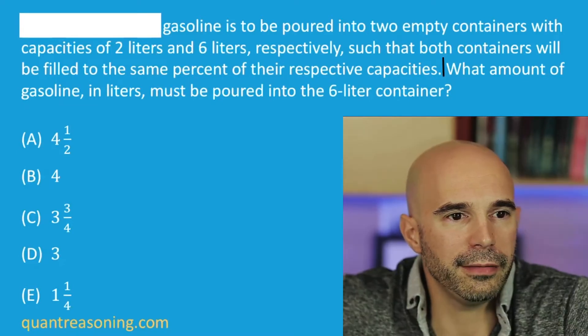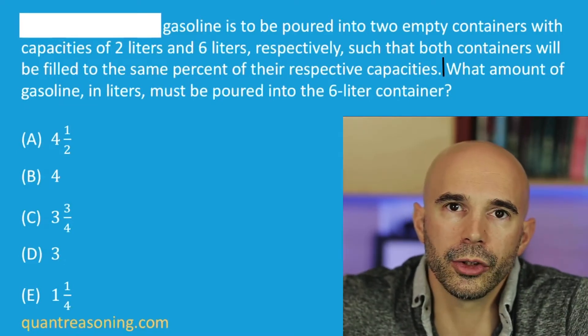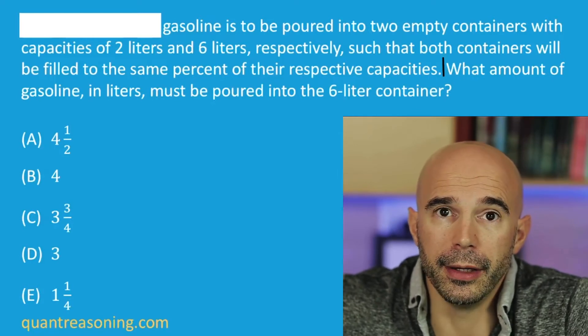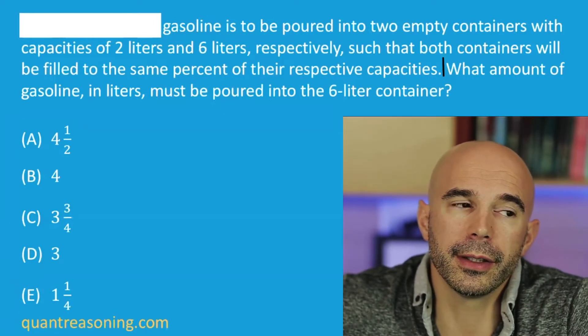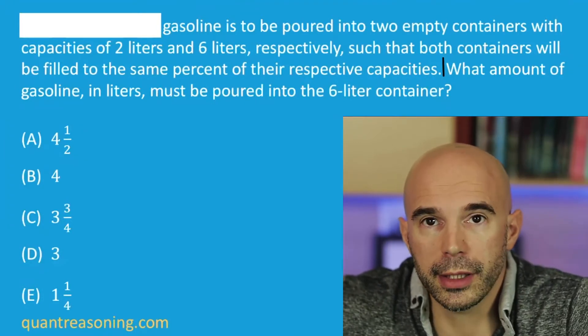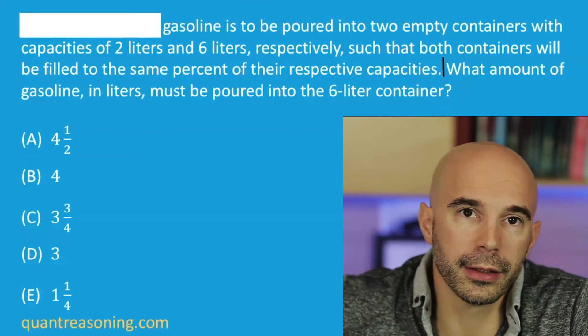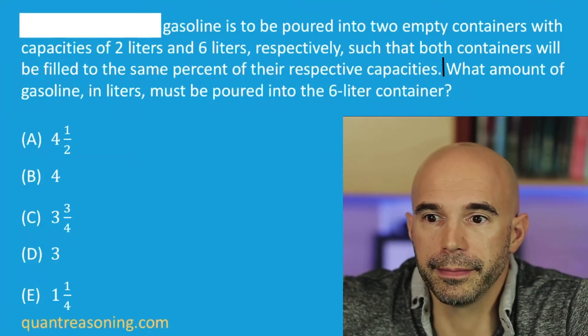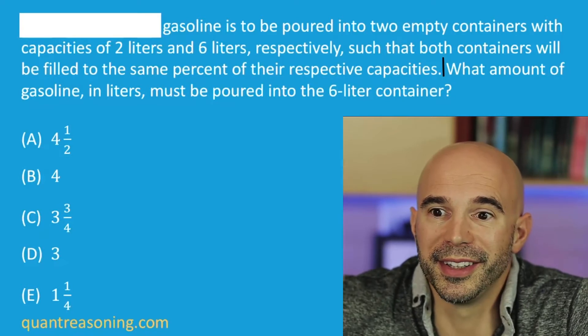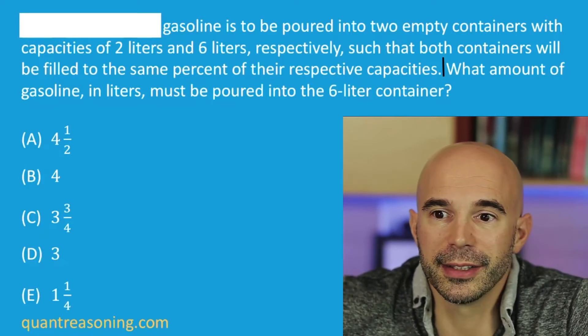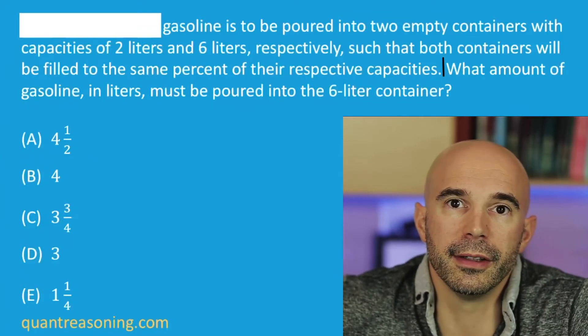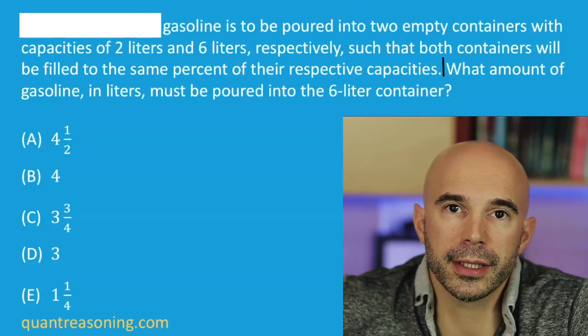If you have two containers such that one is three times as big as the other, and you want them to be filled to the same percent, you'll need to put three times as much stuff in the container that's three times as big. There's a direct positive correlation between the sizes of the containers and the amount of stuff each needs to receive in order to be full to the same percent.